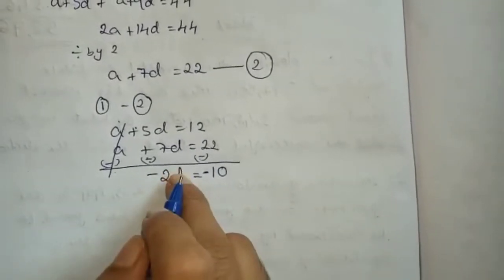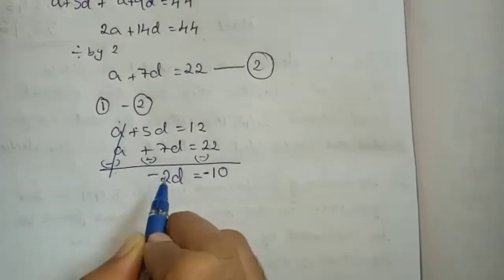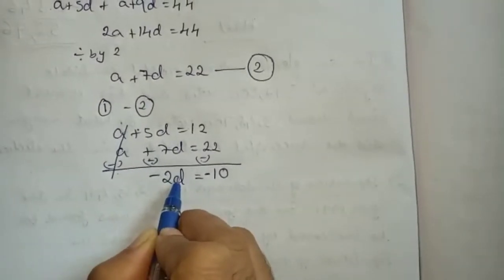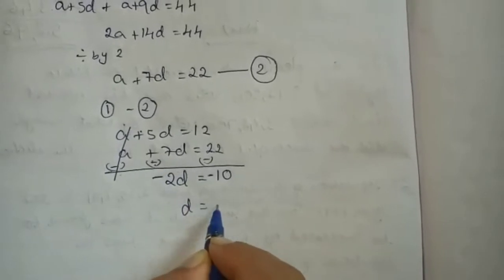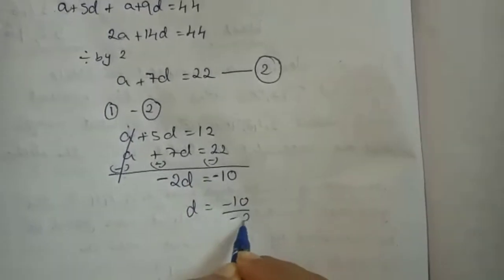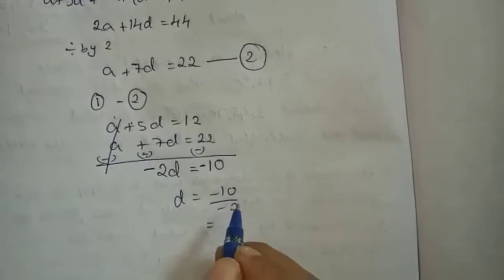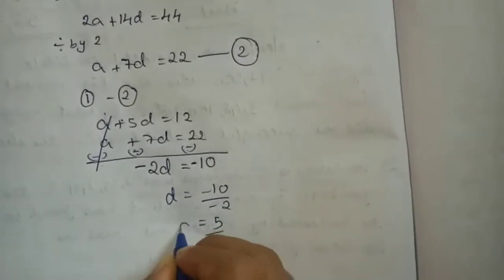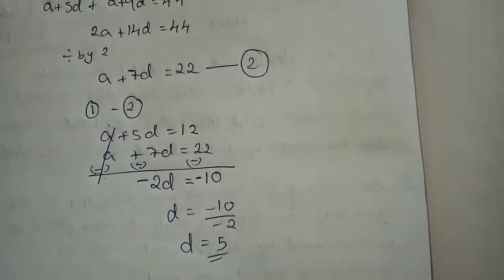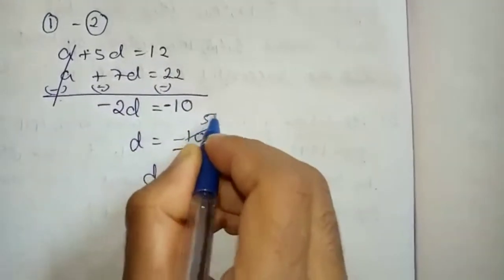We want D. So take this to the other side — 2 is multiplied to D, so when you take to other side, multiplication becomes division. Minus minus becomes plus. 10 divided by 2 is 5. So you got D equals to 5.